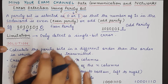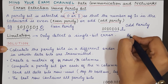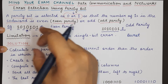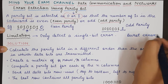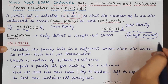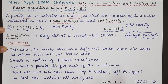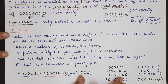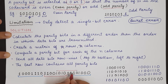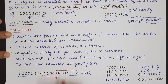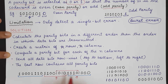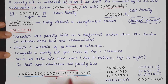We cannot detect burst errors using parity bit alone. A burst error means continuous errors occurring in multiple bits — not necessarily all bits changing, but multiple bits getting changed across a range of positions. For example, if all bits starting from one particular position and ending at another get changed during transmission, that is a burst error.